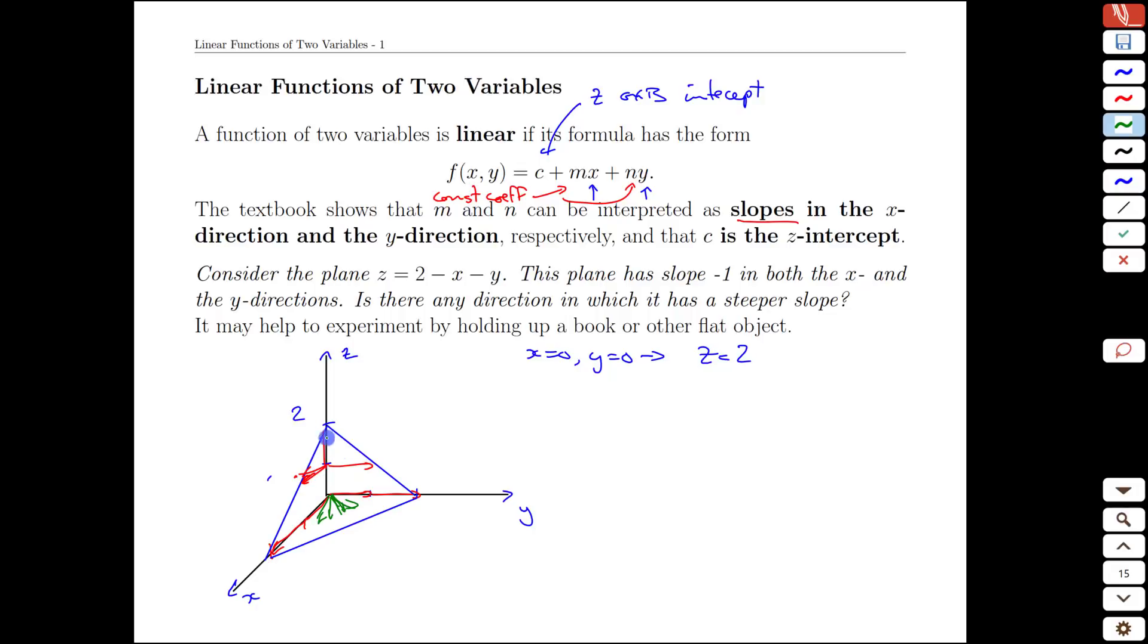Well if we do that you can experiment with this yourself. Imagine finding a corner of a desk and putting a piece of paper up in the corner like this triangle here. If we place ourselves at the peak the slope is negative 1 along both the axes but if you actually go down the middle between those two directions what you're going to find is a steeper slope.